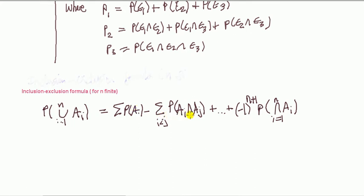So add the individual probabilities together. Then you minus all the pairwise intersections. Then plus, and then you repeat that three events, plus four, minus, and so on. Until you get to the final term, which is probability of intersection of all the events.